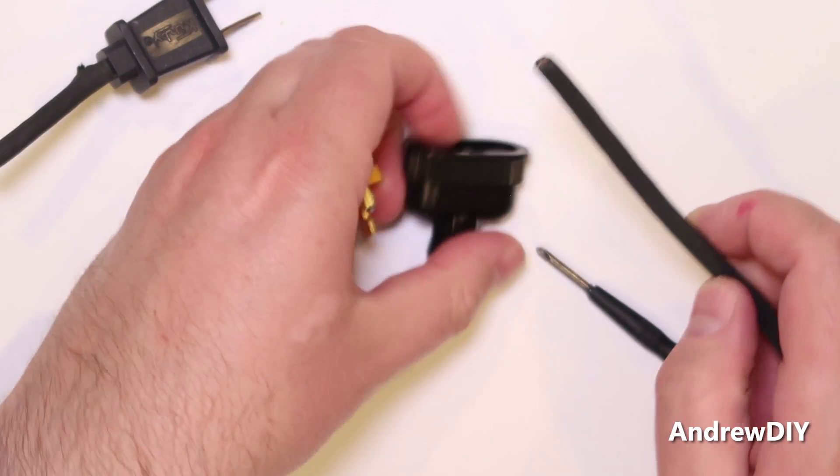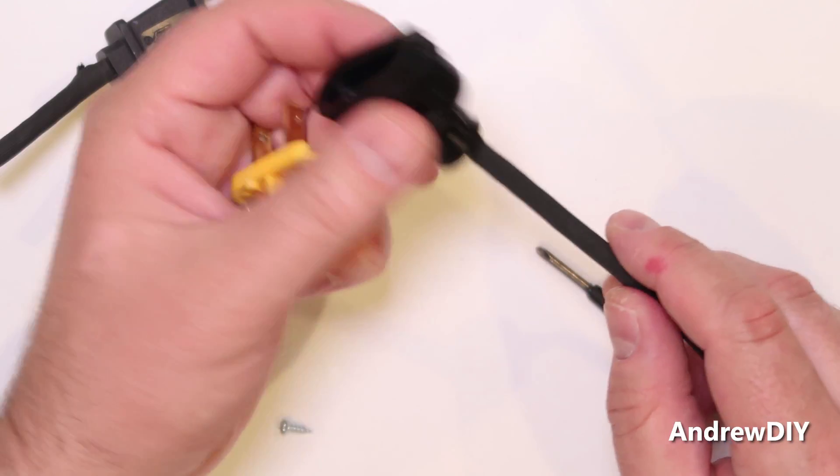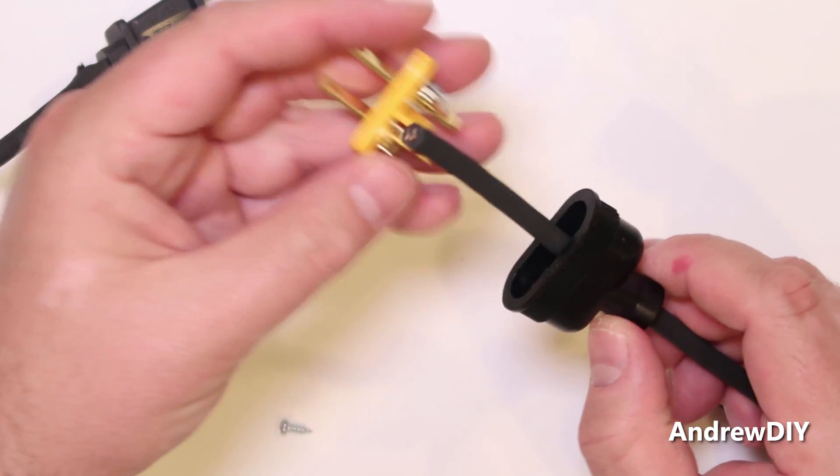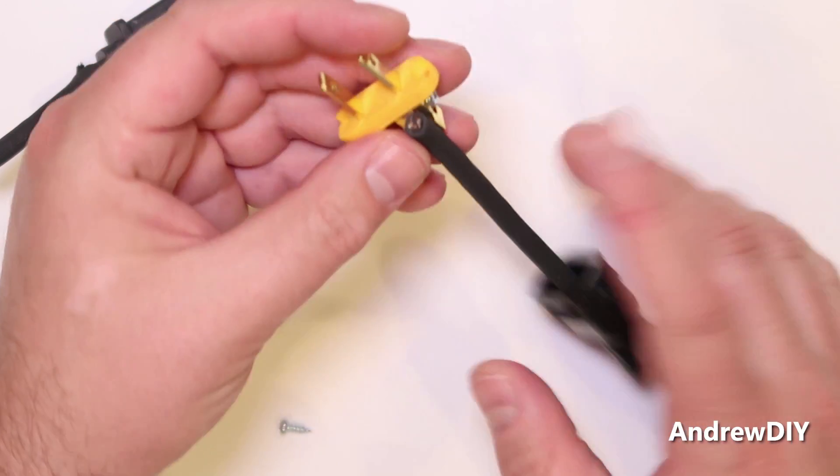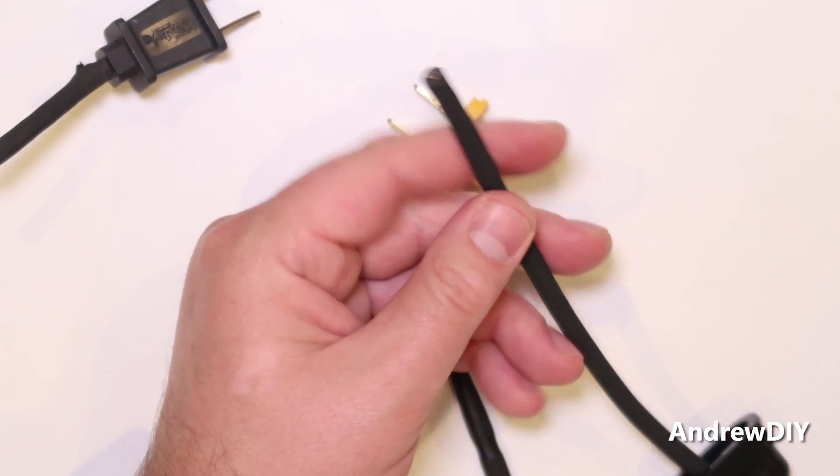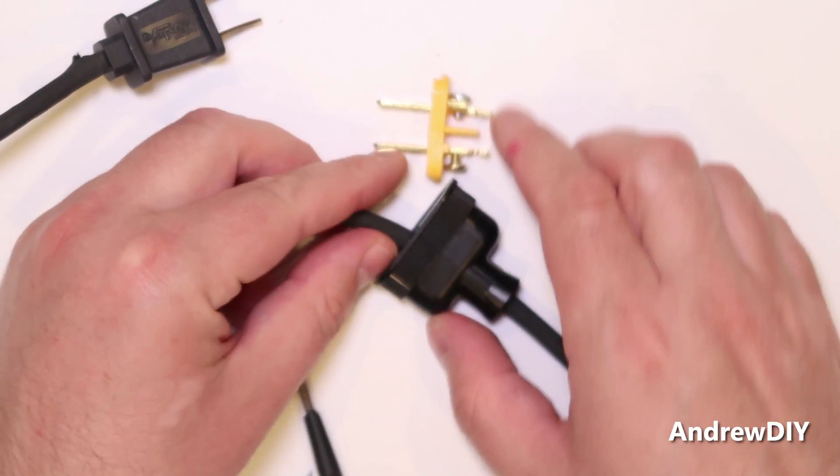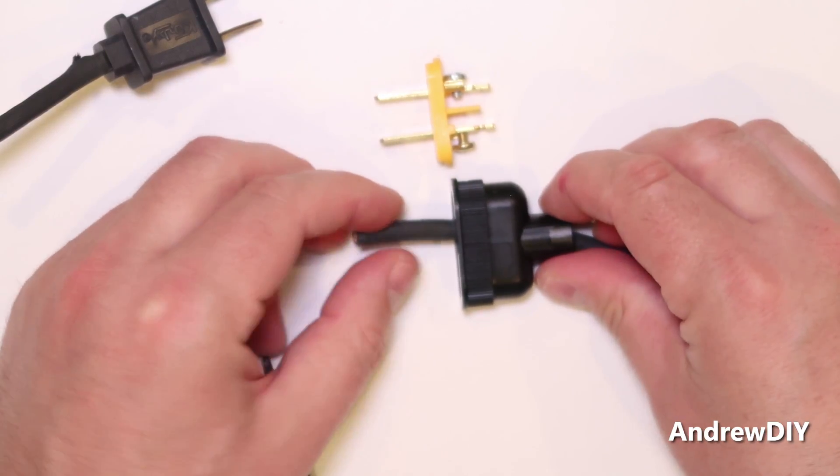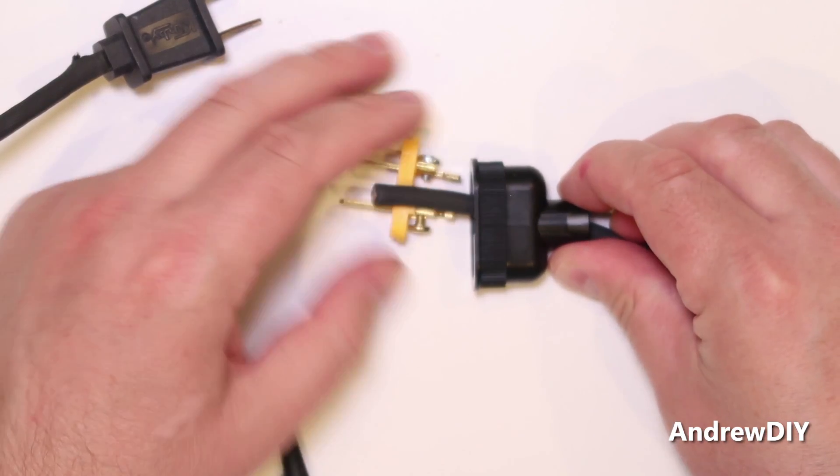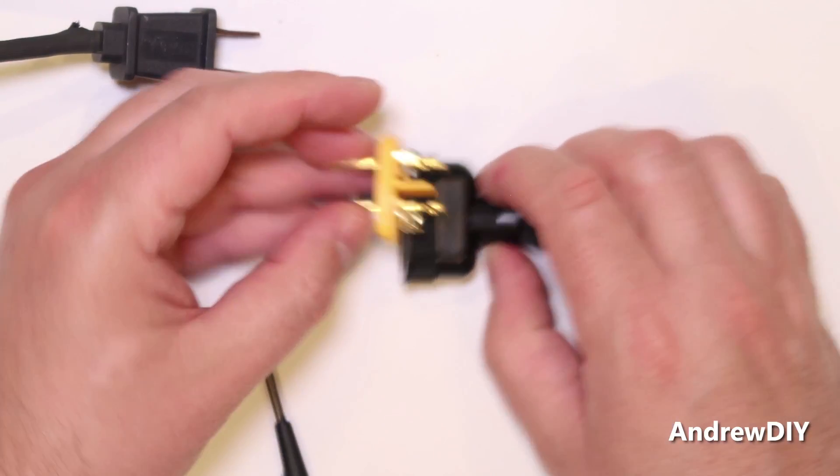Now we take the wire and we need to put it through the plug cover. And you want to measure, you don't want to splice or strip the wire any more than it needs to be. So we're going to measure, just hold it up and see how much wire we need to cut out and how much of the insulation that goes around the whole cord.